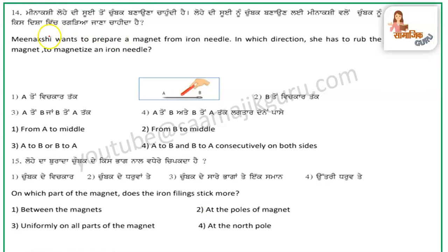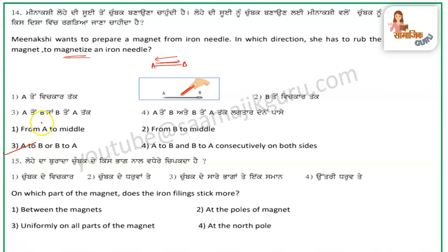Question number 14: Minakshi wants to prepare a magnet from an iron needle. The magnet is used to rub the needle so that it will magnetize. He will move it in one direction — from A to B. Which part of the magnet do iron filings stick to the most? They stick to the poles of the magnet.